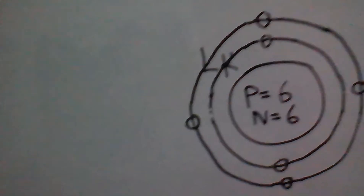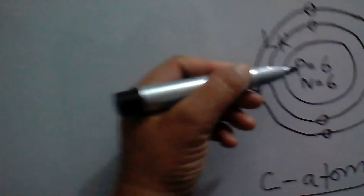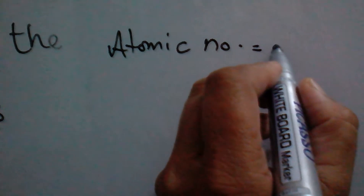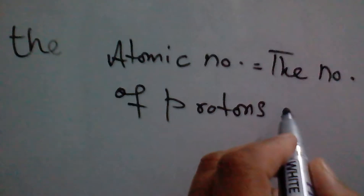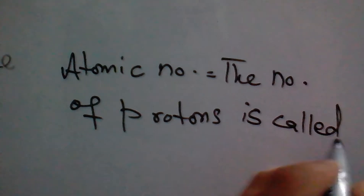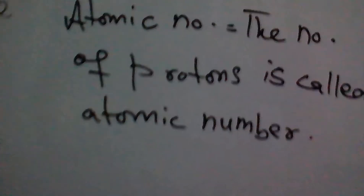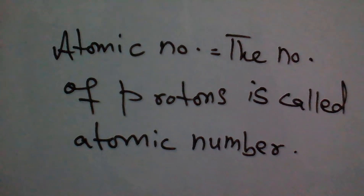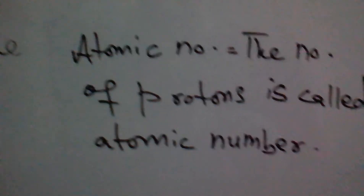We will also discuss the terms Atomic Number and Mass Number. What is Atomic Number? The number of protons is called Atomic Number. Always remember that the number of protons is always equal to the number of electrons. In Carbon Atom, the number of protons is 6, so the Atomic Number of Carbon Atom is 6.